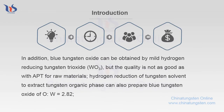In addition, Blue Tungsten Oxide can also be attained by Mild Hydrogen Reduction of Tungsten Trioxide (WO3), but the quality is not as good as APT for raw materials. Hydrogen Reduction of Tungsten Solvent to Extract Tungsten Organic Phase can also prepare Blue Tungsten Oxide where O/W equals 2.82.